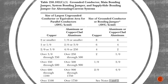Here is Table 250.102 C1. This table is used for grounded conductors, main bonding jumpers, system bonding jumpers, and supply-side bonding jumpers for alternating current systems. It works exactly as Table 250.66 worked: on the left side is the size of the largest ungrounded conductor or equivalent area for parallel conductors, and on the right column is the size of the grounded conductor or bonding jumper. Depending on the conductor size on the left, go straight across to pick the conductor on the right. Revisit Table 250.66 if you need a refresher.